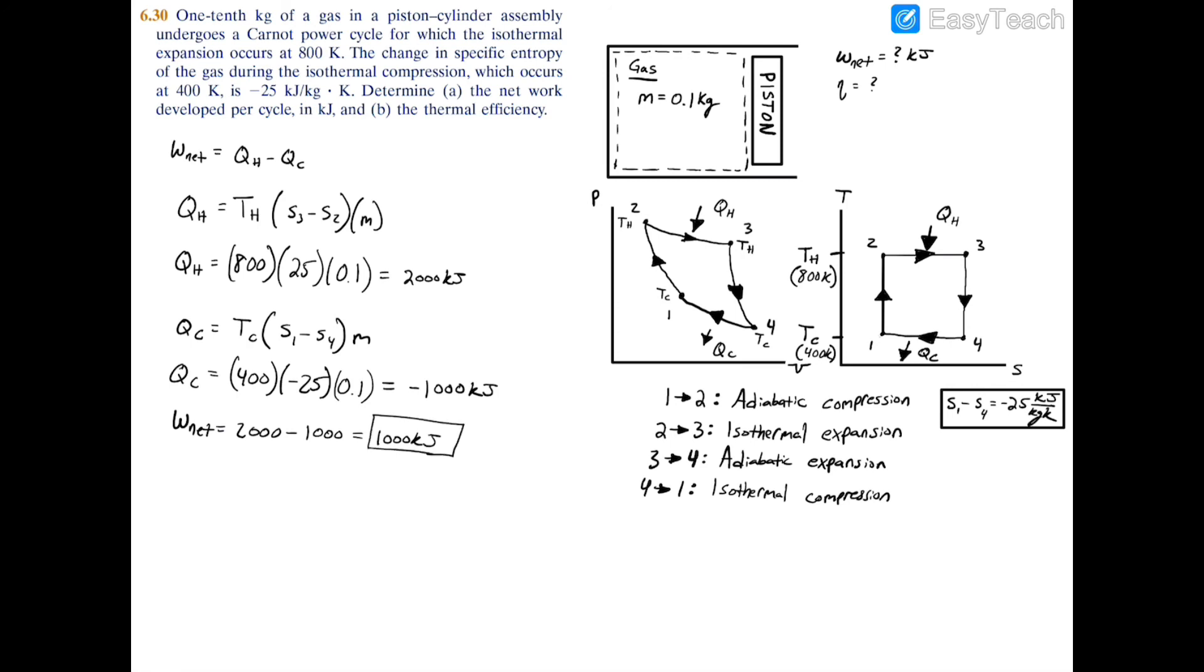Now it's easy to find the thermal efficiency. Thermal efficiency is the cycle work divided by Q_hot, which is 1000 kJ ÷ 2000 kJ = 0.5, or a thermal efficiency of 50%.